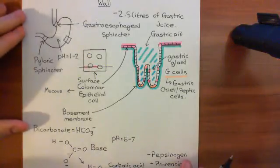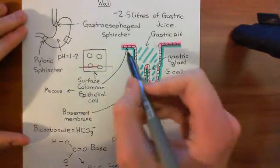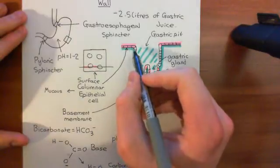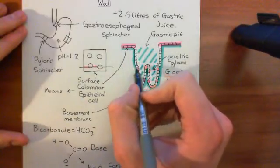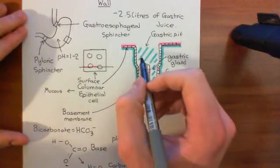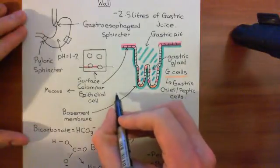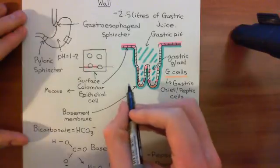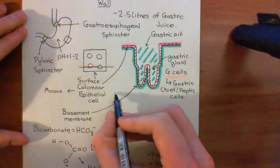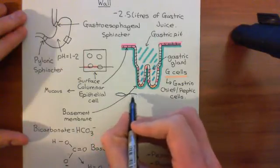Welcome back to this next video in which we are discussing the stomach wall histology. We've now looked at the epithelial cell layers and the outer layer of cells which faces into the lumen of the stomach. What we now want to see is what lies underneath this. Basically, what you then have is a layer of connective tissue called lamina propria, and this ends when you have a layer of smooth muscle cells known as muscularis mucosae.